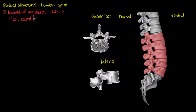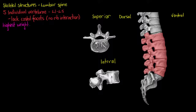The first thing we can notice straight away about our lumbar vertebrae is that they lack costal facets. The costal facets being the point on the thoracic vertebrae that allows interaction with our ribs. Our lumbar spine doesn't need to interact with our ribs because there are no ribs down there. They are also the highest weight-bearing vertebrae, so that results in them being the largest and the thickest bone in our vertebral column.